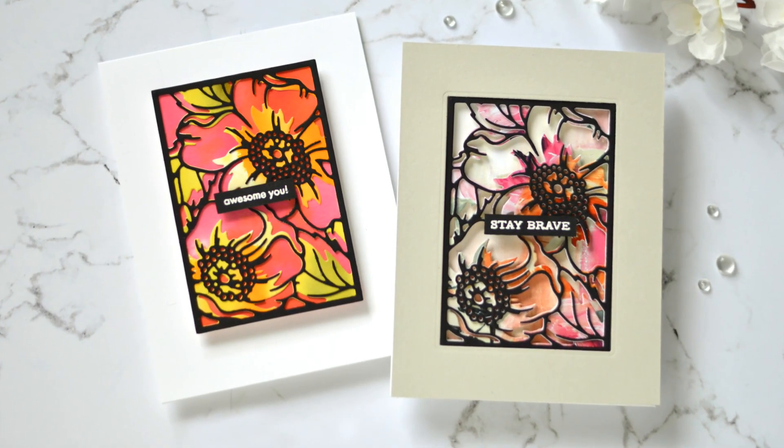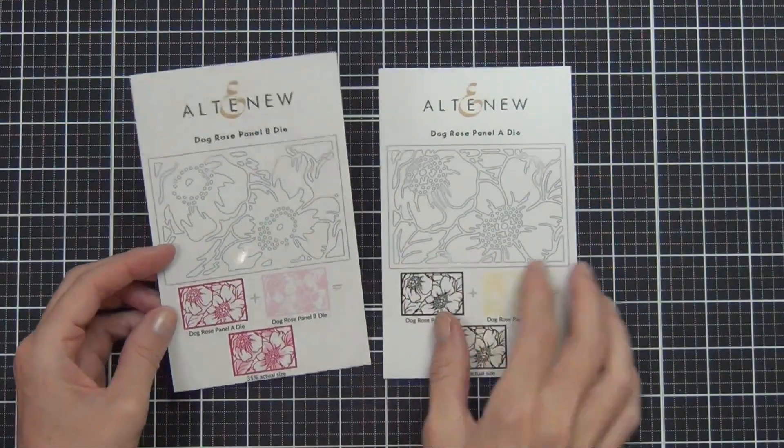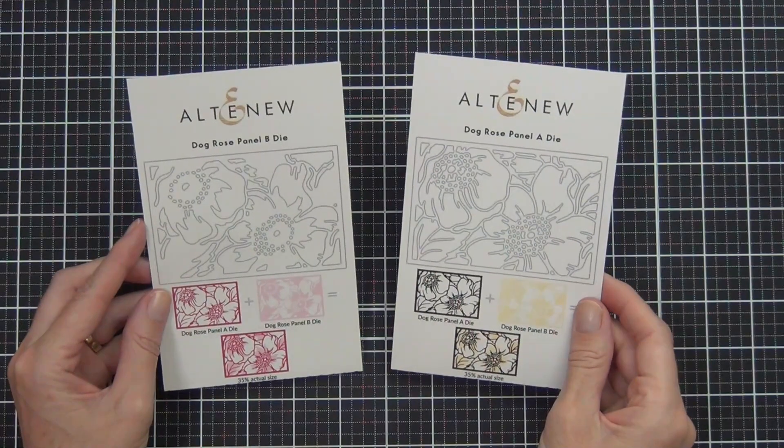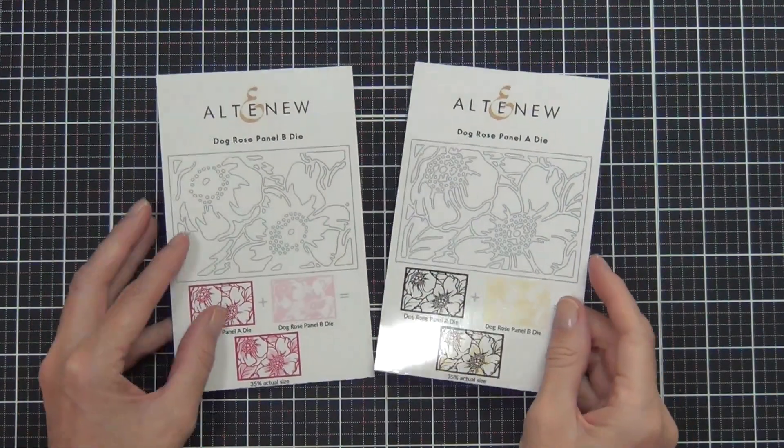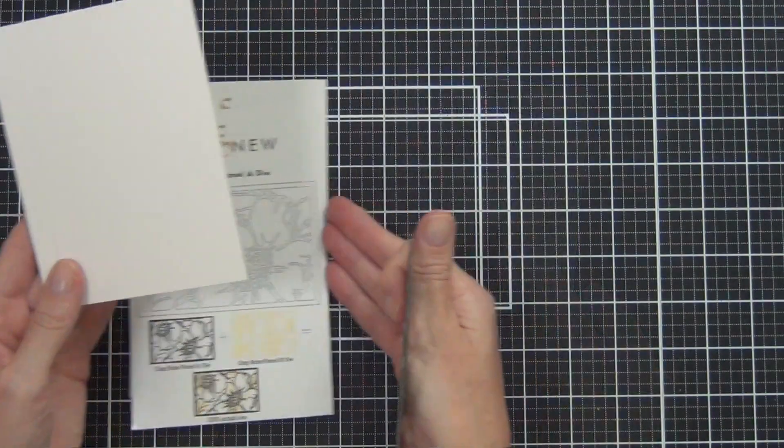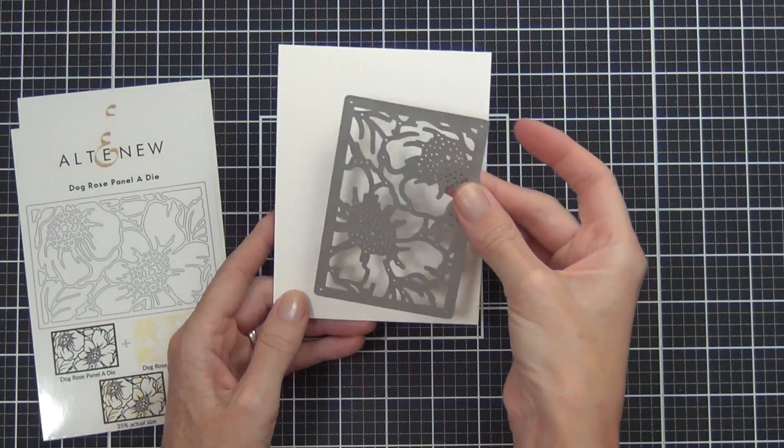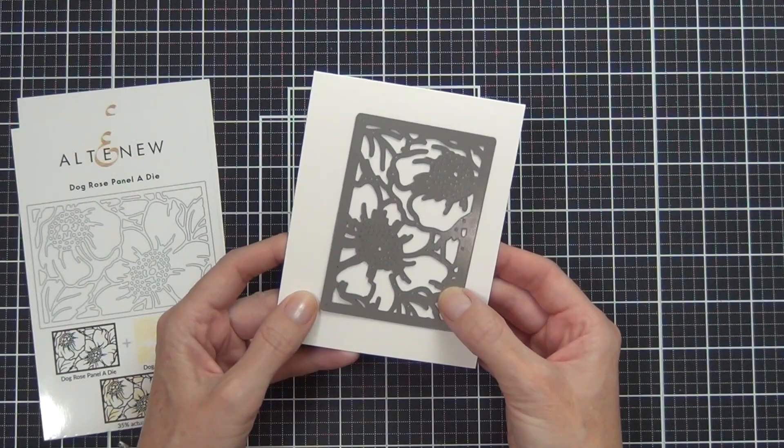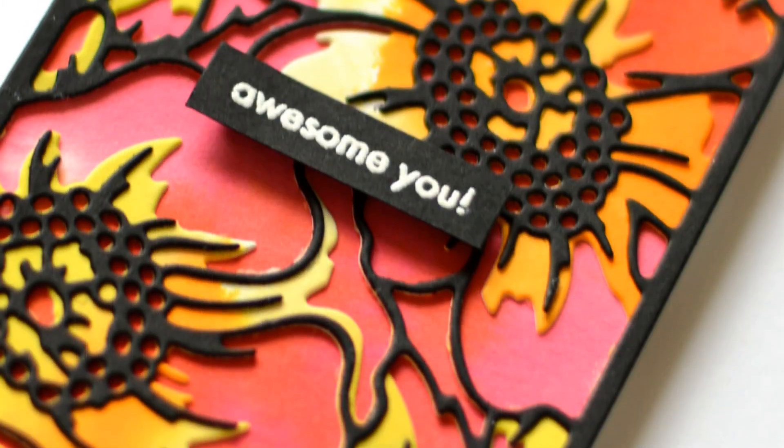Welcome back, it's time for another Take Two with Therese. I've got two beautiful floral panels to share with you today using the dog rose panel. This is an A and B die, so you can layer them together or use them independently. I want to show you the size of the die - it's not like a cover die that covers the whole front of a card, but it does make a real statement as the main focal point. A really beautiful die.